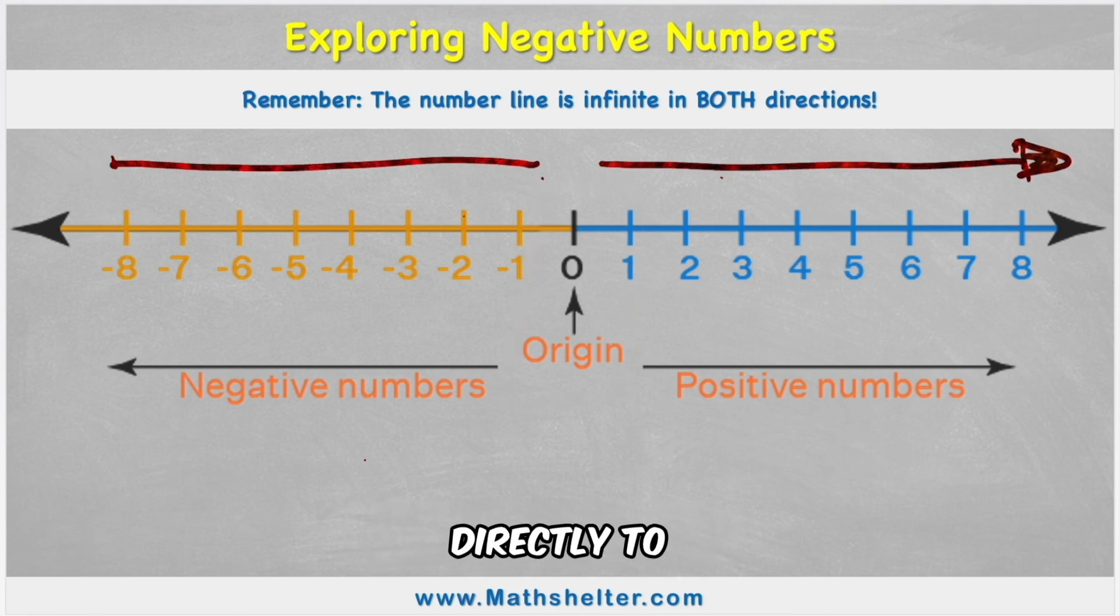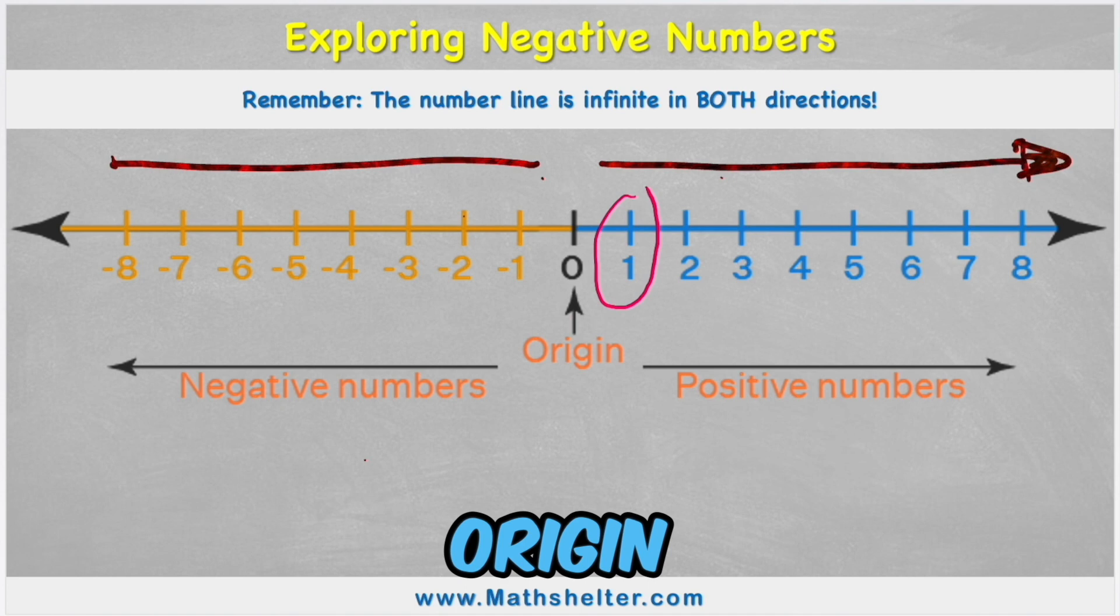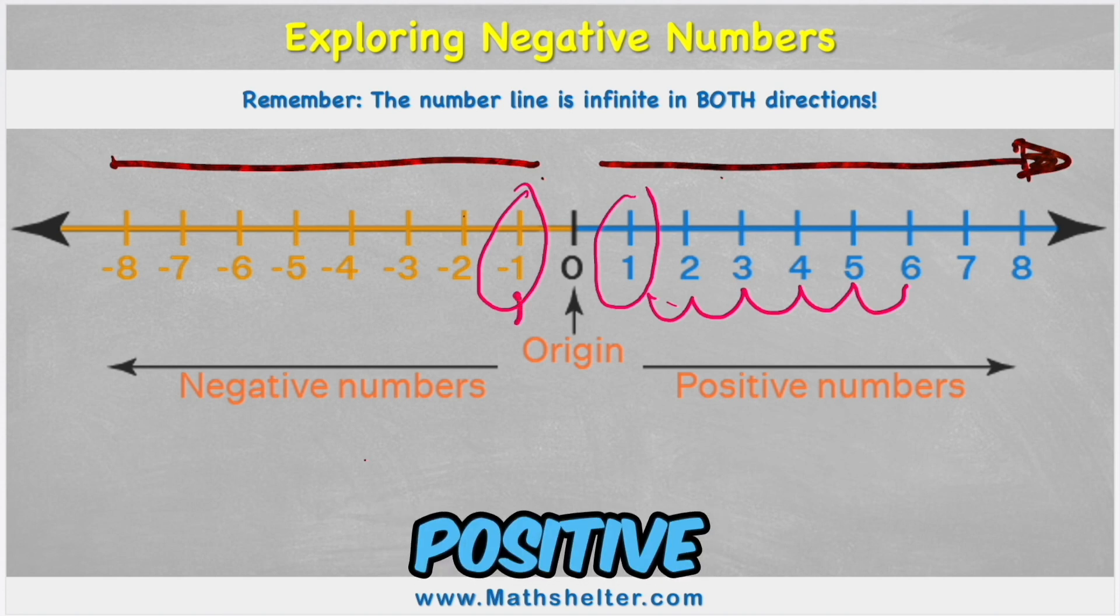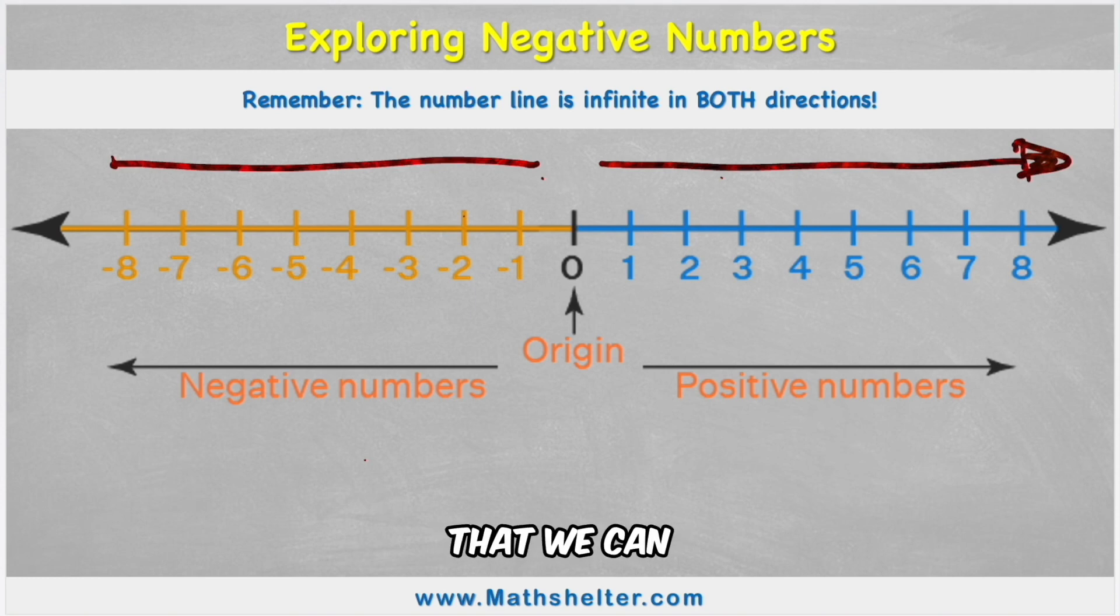And then the numbers directly to the right and left of the origin are one and minus one. And they're going to go up in sequence. But to the right is positive and down to the left is negative. And we also need to remember that we can get into debt with numbers. I can owe an amount.